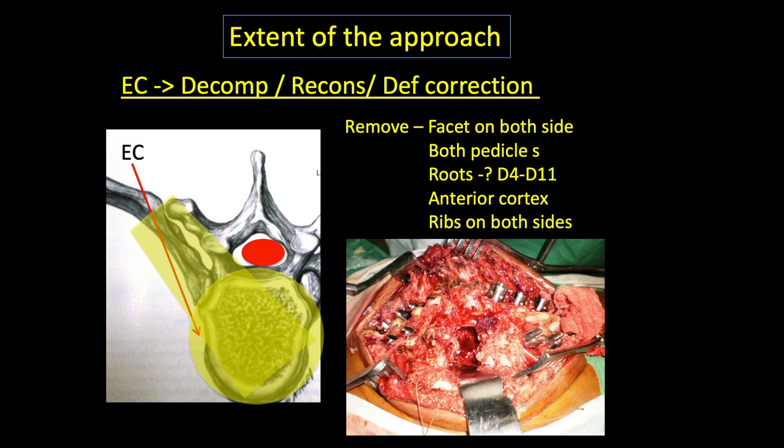Whereas in a more extensile approach, that is the extra-cavitatory, along with all these things, we remove the anterior cortex and ribs on one or both sides, and this is essentially used for deformity correction.